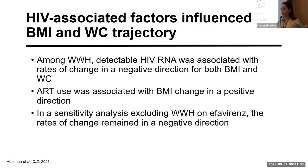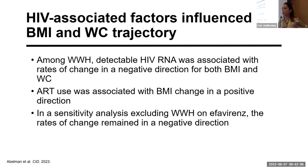Corroborating these results, we found that HIV-associated factors influenced BMI and waist circumference trajectory. Among women with HIV, detectable HIV RNA was associated with rates of change in a negative direction for both BMI and waist circumference, while ART use was associated with BMI change in a positive direction. Interestingly, a sensitivity analysis among women with HIV on efavirenz — performed to mitigate potential confounding since efavirenz has weight effects — found that the rates of change remained in a negative direction, corroborating these results.